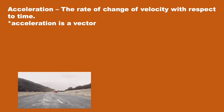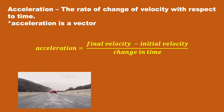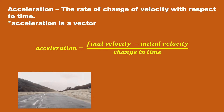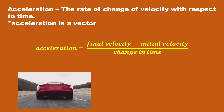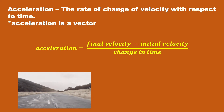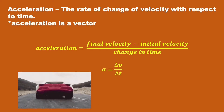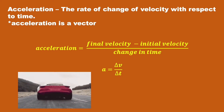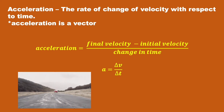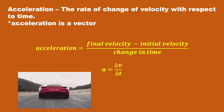Mathematically, acceleration looks like this. It says the same thing as the definition: it is change in velocity over change in time. So final velocity minus initial velocity over the time frame you're looking at. You can also write it as acceleration equals delta V — change in velocity — over delta T, change in time.